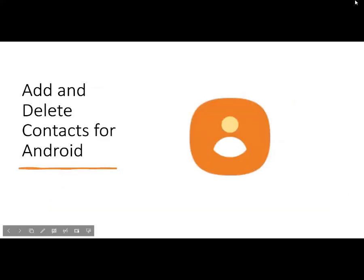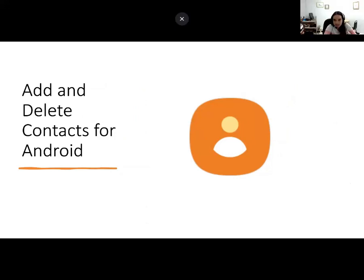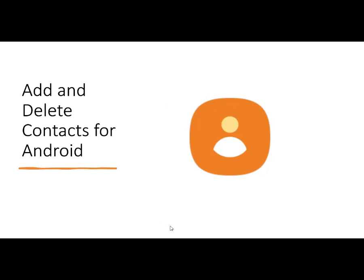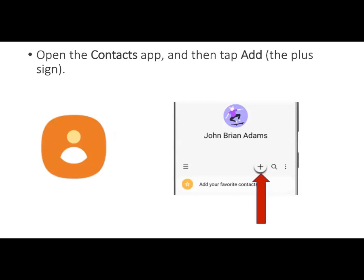Next up is those that have Android or Samsung phones. Even if there's no one on this call with that device, I'm recording it so when you watch the YouTube video, those with Androids can see it too. For Android Samsung phones, this is your contacts app — it's orange with a person icon. When we open up the app, it looks similar to the iPhone app: all the way in the top right-hand corner is a plus sign, just like iPhone.